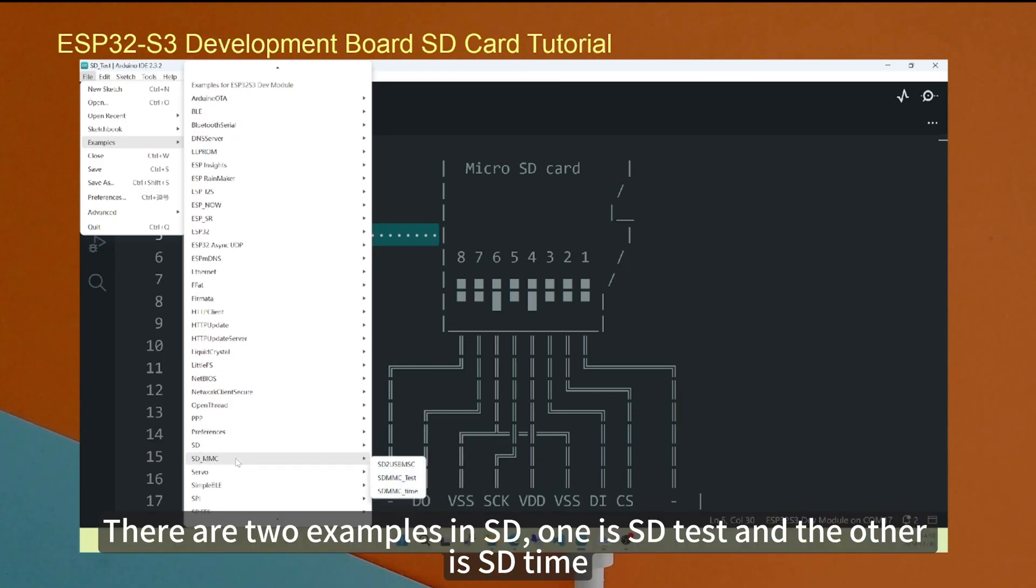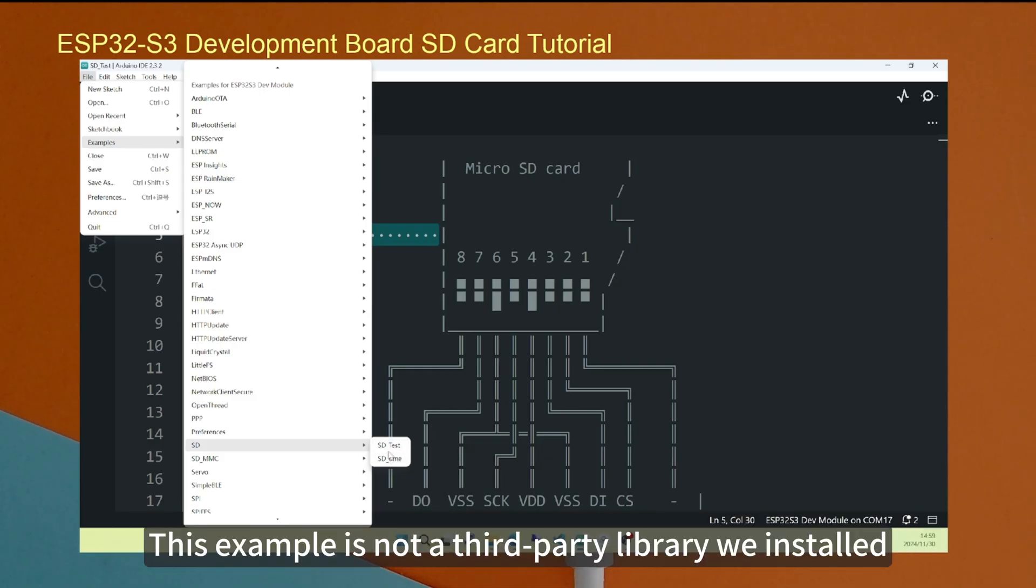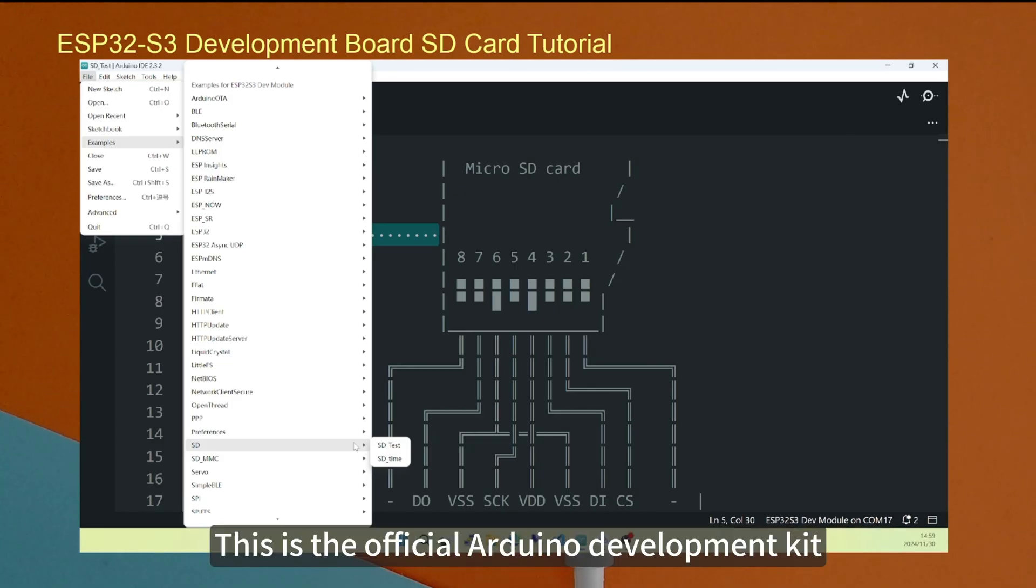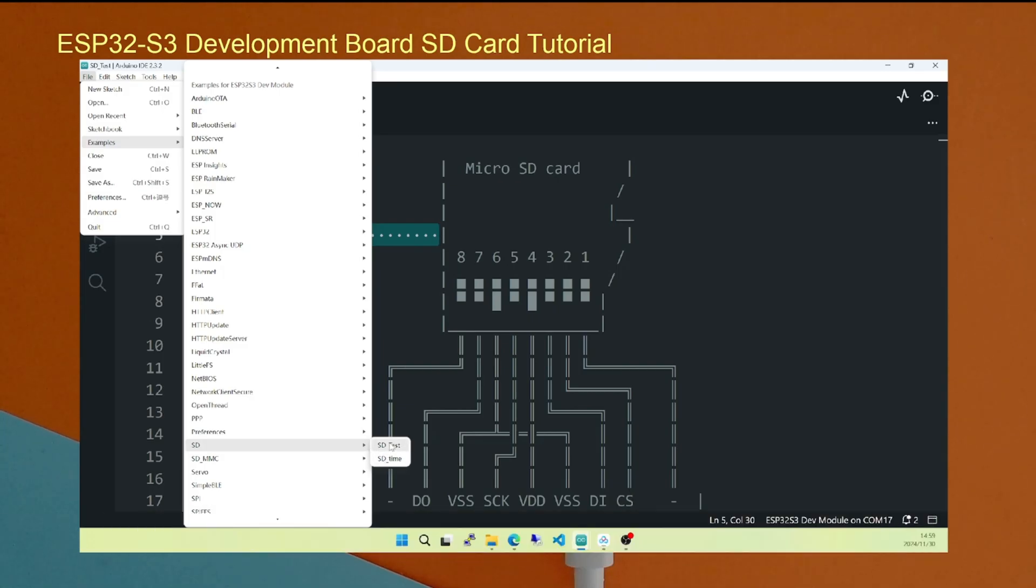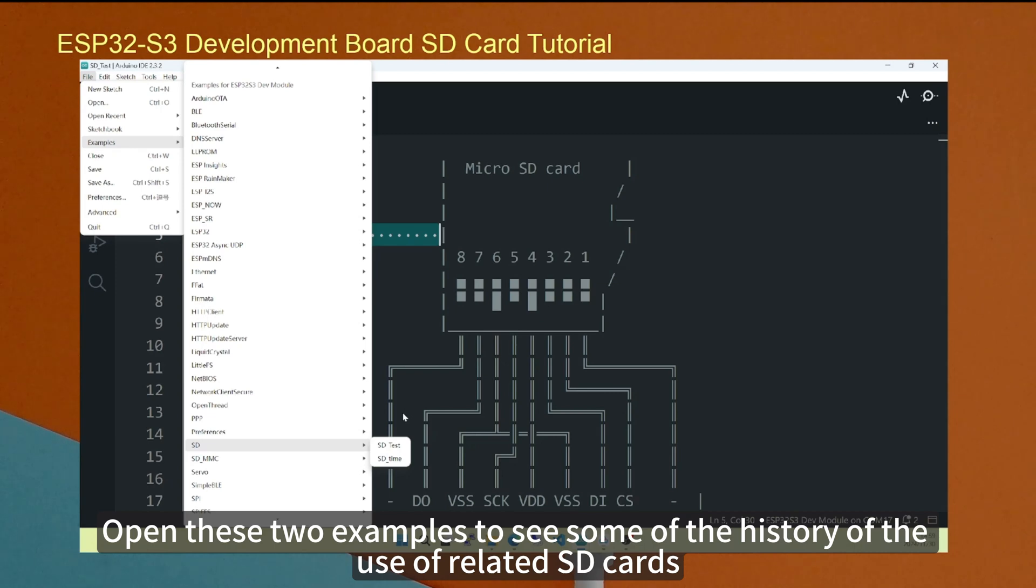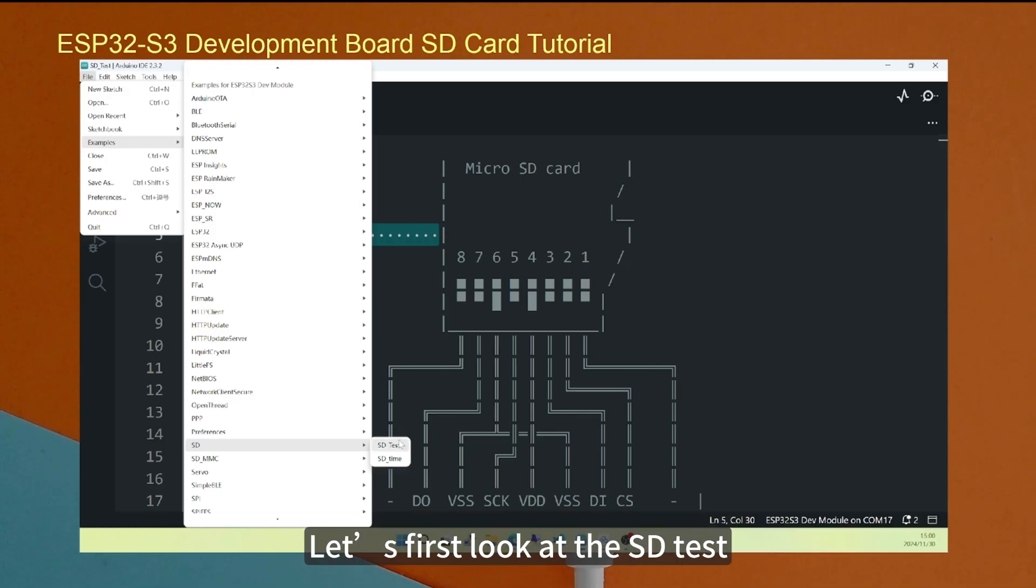There are two examples in SD. One is SD testing and the other is SD timing. This example is not a third-party library we installed. This is the official Arduino development kit. This is the ESP32-S3 Arduino development kit with a built-in SD card example. Let's first look at the SD test.